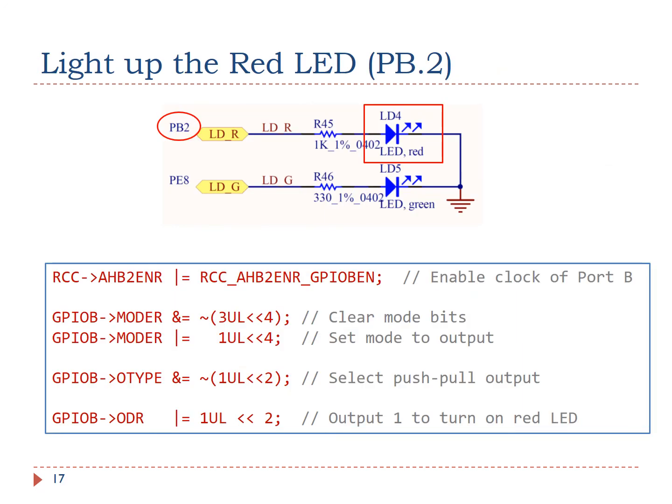This slide summarizes the software code, which can turn on the red LED. The red LED is connected to pin 2 of port B. The software involves 4 steps. First, we turn on the clock to enable port B. Then, we set the mode of pin 2 of port B as digital output.